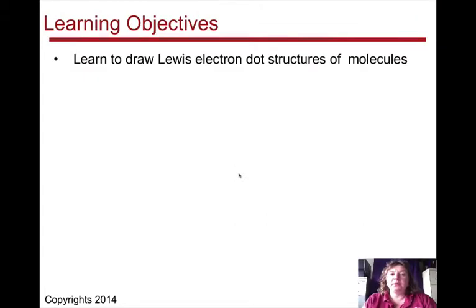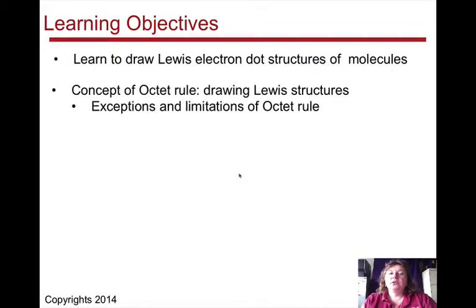The learning objectives of this unit are to: one, learn to draw Lewis electron dot structures of molecules; two, be able to understand the concept of the octet rule in how it relates to Lewis dot structures, and be able to also understand that there are exceptions to the octet rule, and understand where you need to apply the octet rule and where you don't.